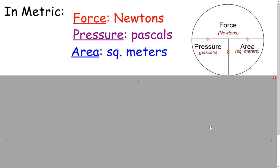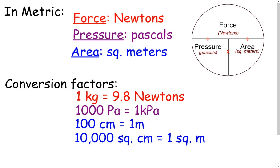To wrap this up in metric: we have force in newtons, pressure in pascals, and area in square meters. You don't have to remember all of this — just remember to look at your conversion sheet. The key conversions are: 1 kilogram is 9.8 newtons; 1,000 pascals is 1 kilopascal; 100 centimeters is 1 meter. And if you square your centimeters first, 10,000 square centimeters equals 1 square meter. I hope this video makes force, pressure, and area problems in metric a little bit easier for you. Good luck.